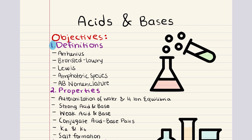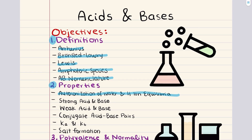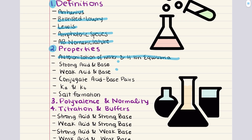The first objective is titled definitions. We're going to begin by defining Arrhenius, Bronsted-Lowry, and Lewis acids and bases. In addition, we're going to explore amphoteric species and cover the essential terminology for acid-base nomenclature. The second objective is titled properties. Here we're going to dive into the properties of acids and bases, starting with the auto-ionization of water and hydrogen ion equilibria. Our discussion will then move to strong and weak acids and bases, conjugate acid-base pairs, the concepts of Ka and Kb, and finally salt formation. Then we'll move into our third objective, where we're going to examine the concepts of polyvalence and normality and understand how they apply to acids and bases.